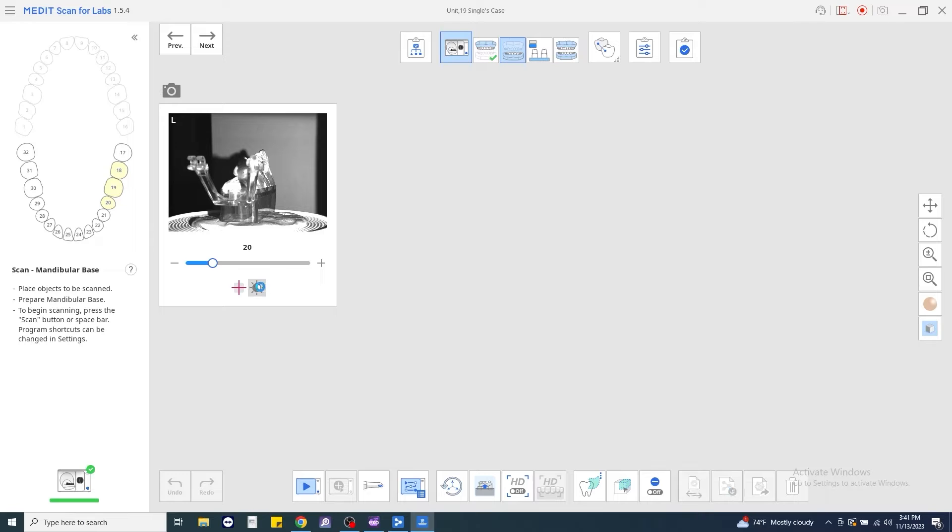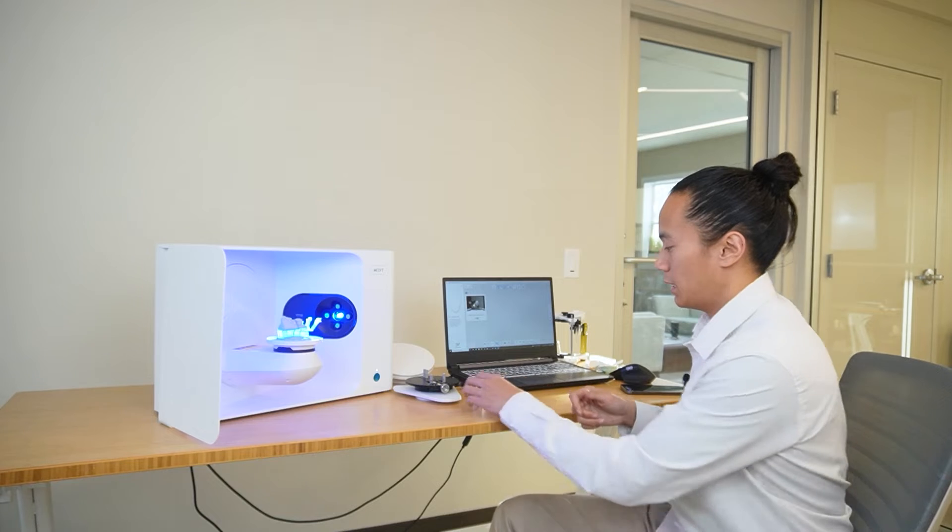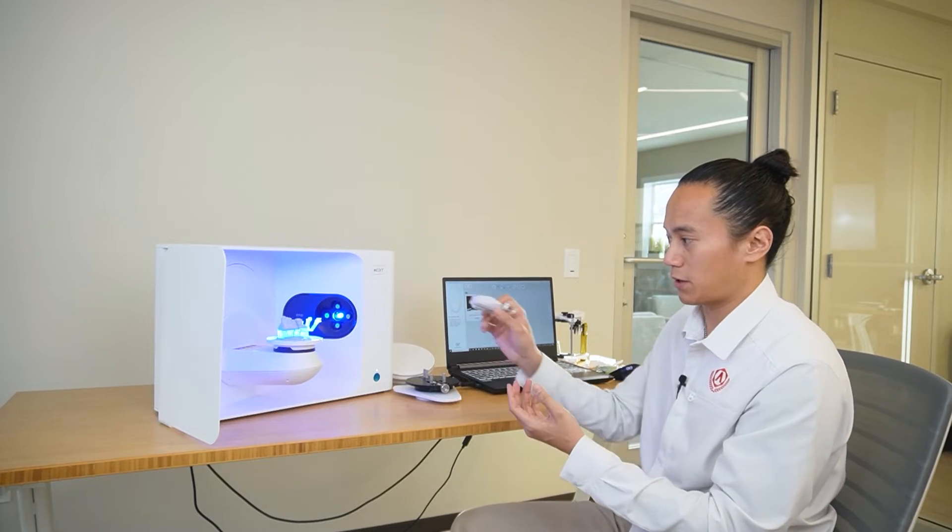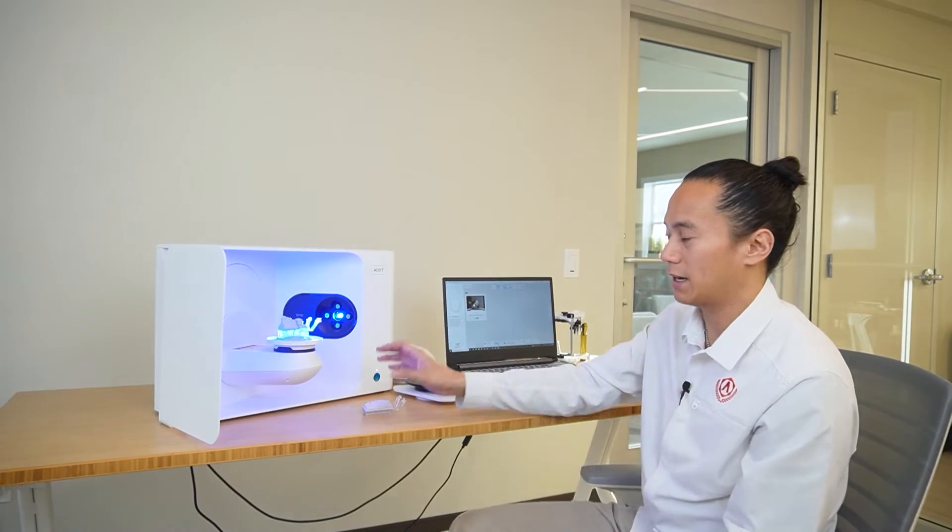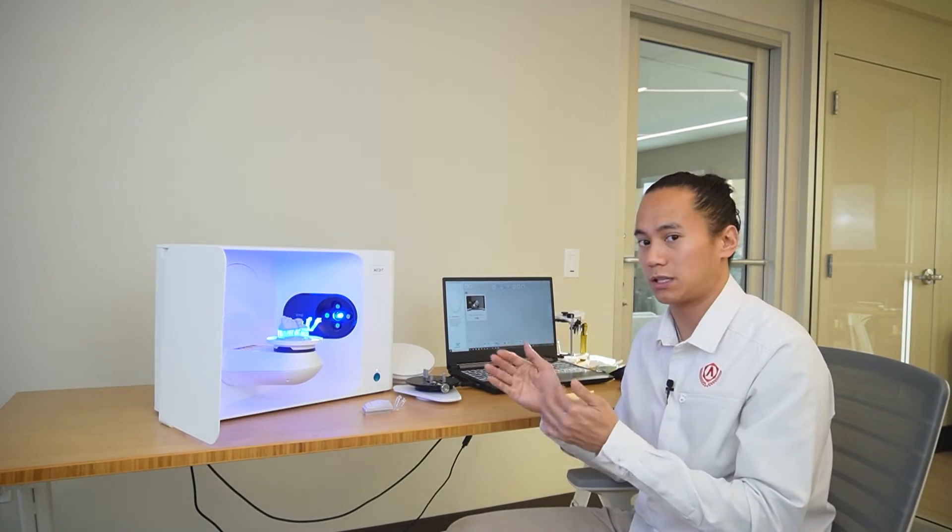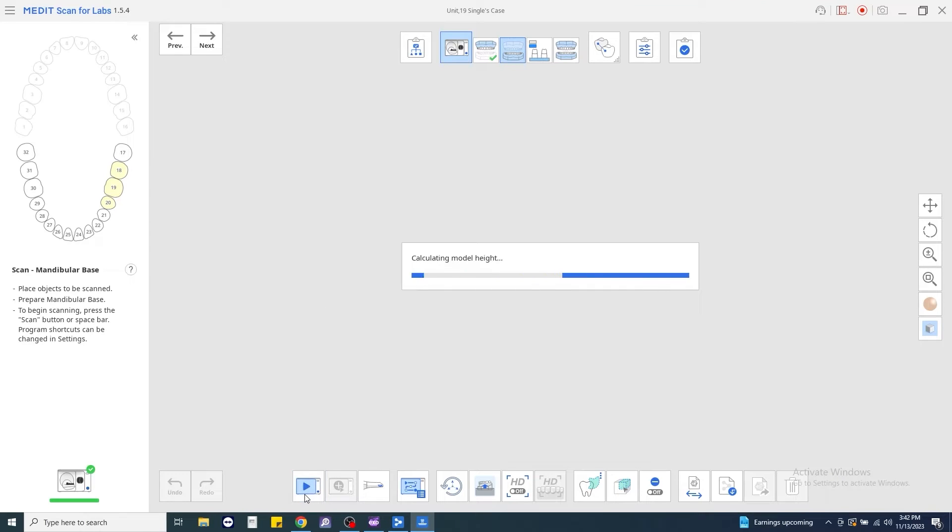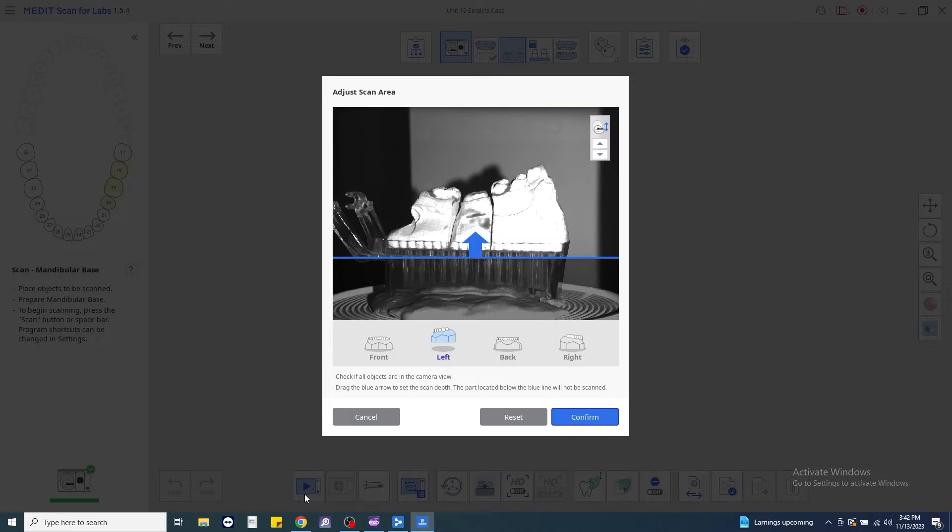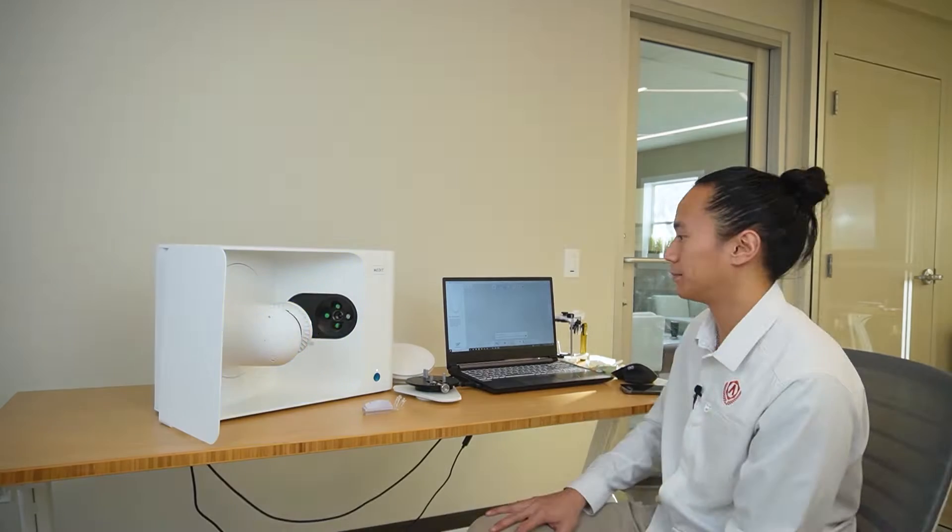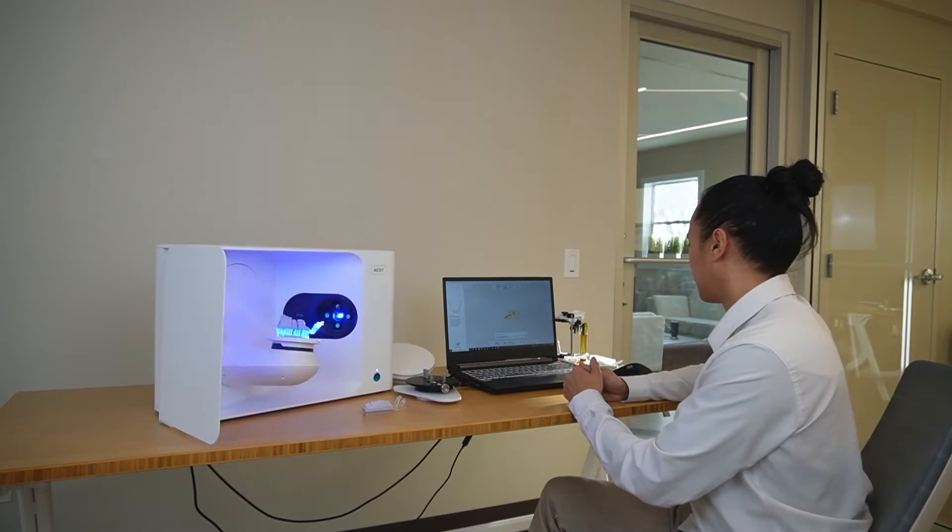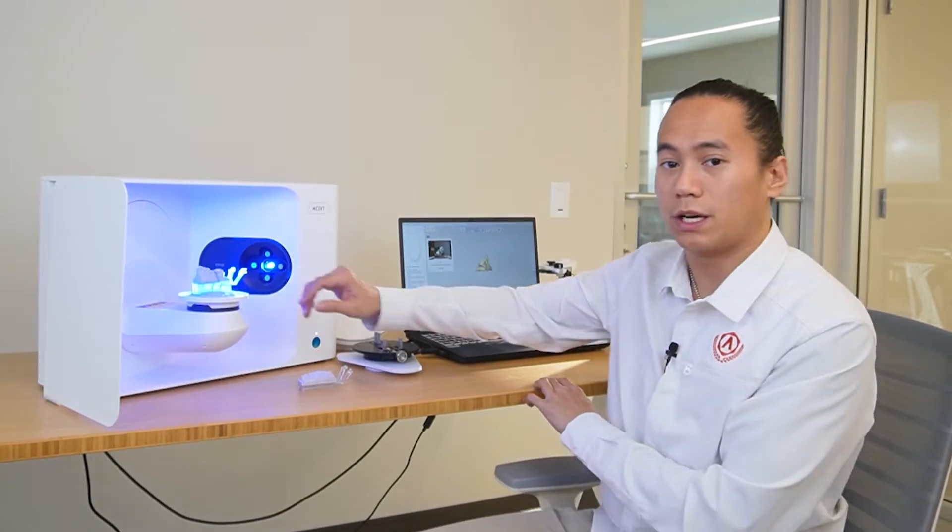We'll go ahead from there. Again, confirm your brightness. You always want to just double check your brightness every single time, especially as you can see the models are different colors. We want to make sure that the brightness has been adjusted to account for that. We can go ahead and click Scan once we've confirmed. Again, always double check the model height and confirm.